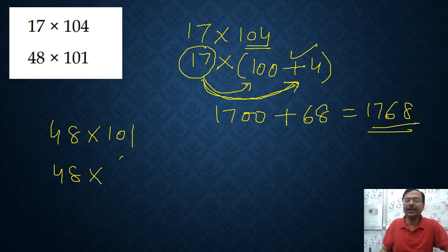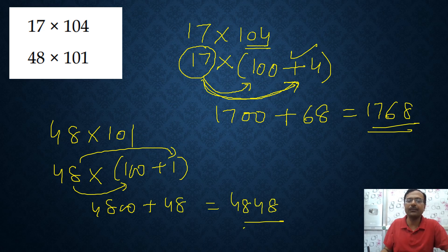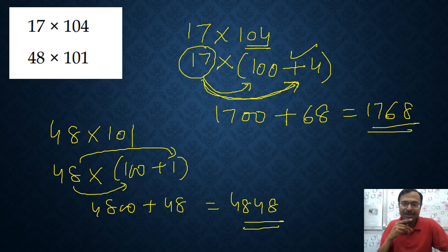Let's see 48 into 101, it is all the more simpler. Why? Because 48 into 100 plus 1, and 48 into 100 is 4800 plus 48 into 1 is 48 which gives you the answer as 4848. So the distributive property works for us here.